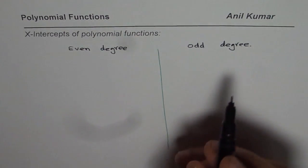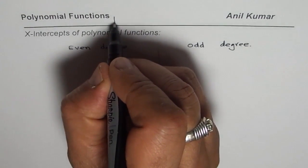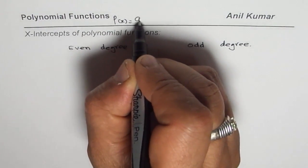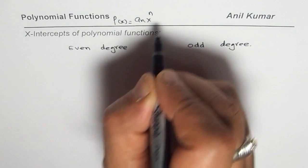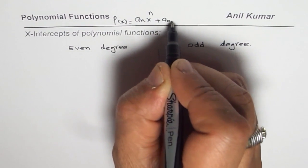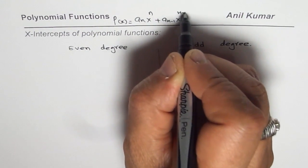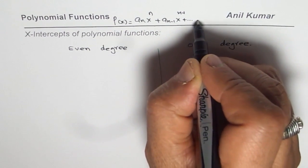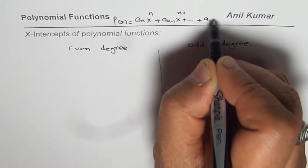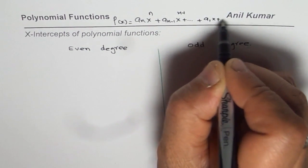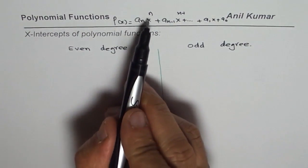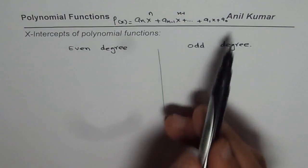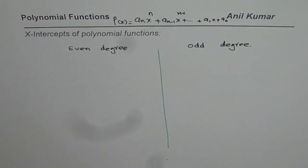Let me first write the general equation of a polynomial. We say p(x) equals a_n·x^n plus a_(n-1)·x^(n-1) plus so on, down to a_1·x plus a_0. That n is the degree of the polynomial, and it could be an even number or an odd number.